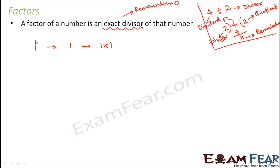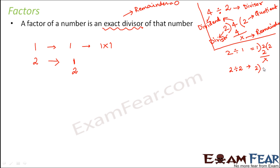Now let us consider 2. For 2, the number 1 is an exact divisor because 2 divided by 1 gives remainder 0. The number 2 is also an exact divisor because 2 divided by 2 gives remainder 0. So 1 and 2 are both factors of 2, and we can write 2 as 1 × 2 or 2 × 1.